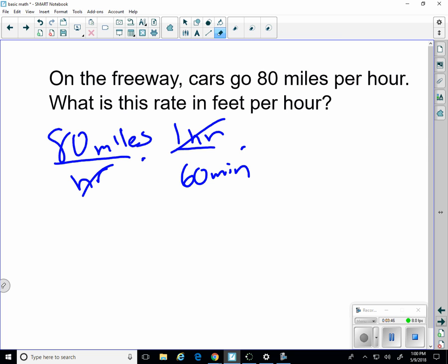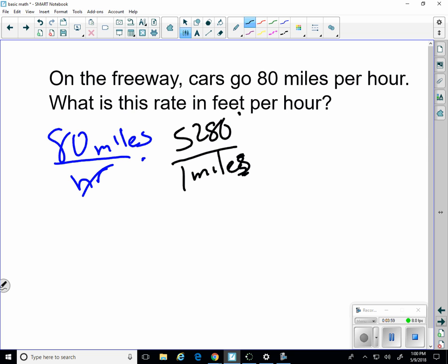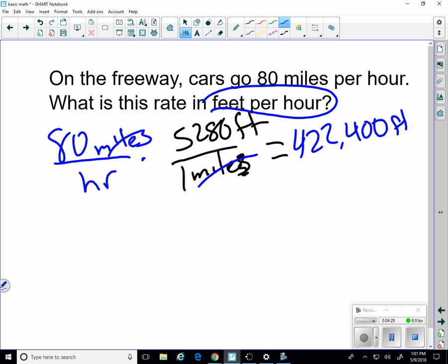Sorry. I need it in per hour, so I need to convert the feet. One mile is 5,280 feet. So 80 times 5,280. That would be in miles per hour. Sorry. The units here do not count, so we're going to use them. The miles cancel, and we have feet per hour. That's what we wanted. And that turns out to be 422,400 feet per hour. That's a lot of feet.